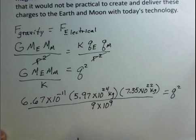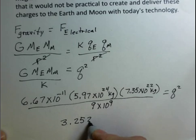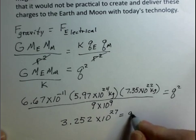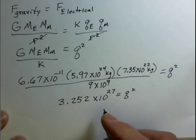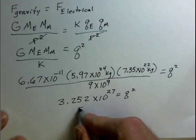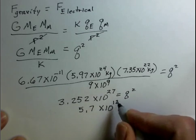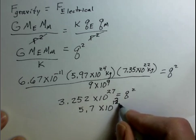Welcome back. So we have 3.252 times 10 to the 27th for Q squared. And if we take a square root of both sides, we get, and I'm going to round a little bit, so 5.7 times 10 to the 13th Coulombs. And why did I write a 2? 10 to the 13th Coulombs.